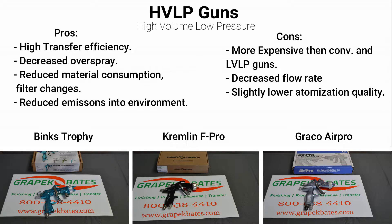Next we'll be talking about HVLP spray guns. HVLP means the gun uses a high volume of air at a low pressure to atomize the material. The main advantage of HVLP is high transfer efficiency and decreased overspray. This translates to reduced material consumption, reduced filter changes, and reduced emissions into the environment. HVLP guns are slightly higher priced than conventional and LVLP, but significantly cheaper than air assisted airless guns. The negatives for these guns are a decreased flow rate and slightly lower atomizing quality.